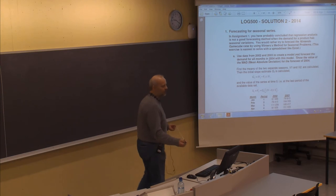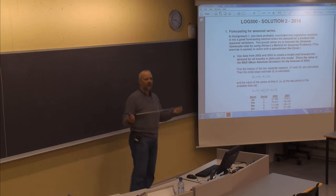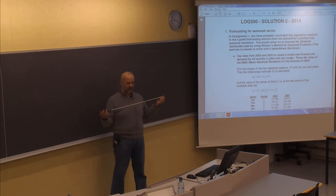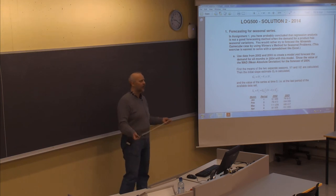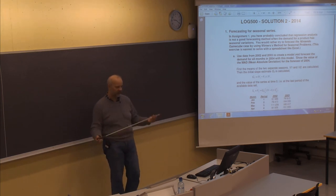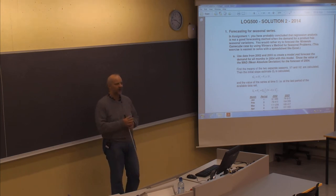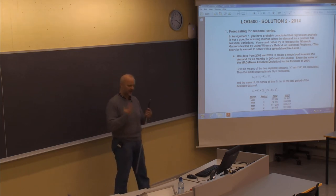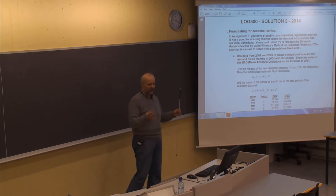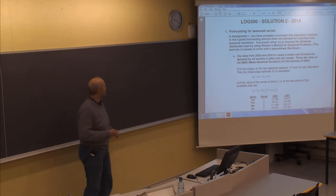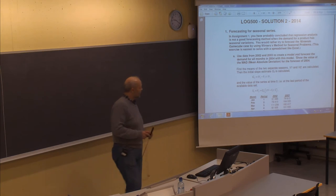We will finish that part and also, if we get time, we will continue on the so-called stochastic inventory theory when there is uncertainty about the demand. You don't know exactly what the demand will be, but you have an idea about the expected demand and also the variation of the demand. But first, the solution for assignment number two.